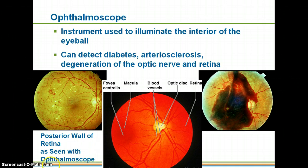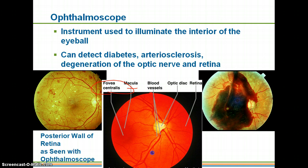This picture in the middle has it labeled. You can see the fovea centralis, which is going to be the area that's only made up of cones. You can see the macula, the blood vessels lining throughout the retina, the optic disc — which is your blind spot — and then obviously the whole area of the retina.